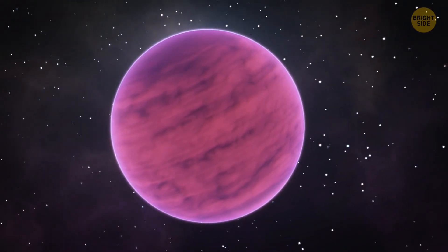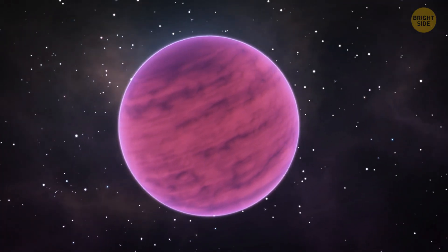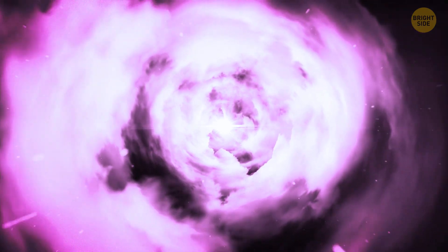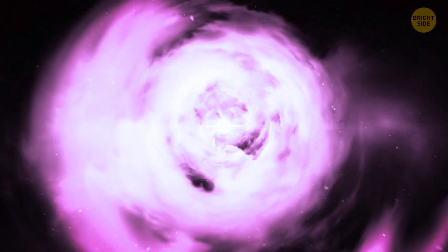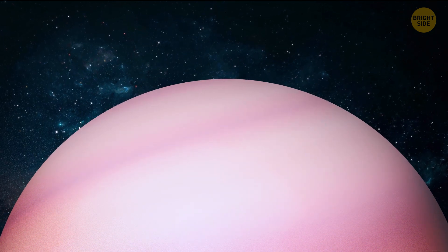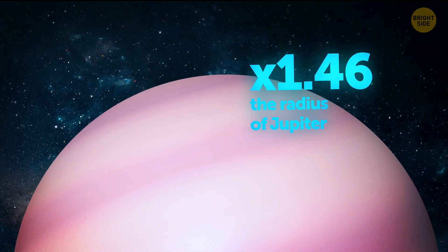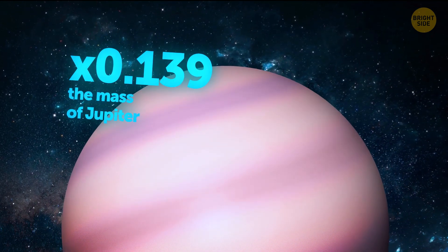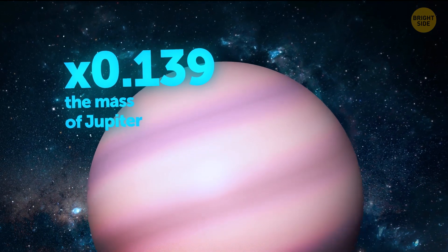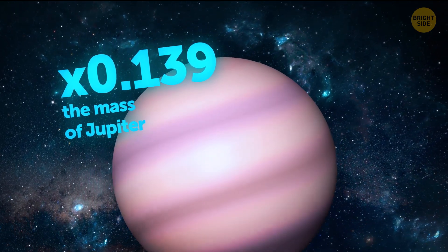It has an extremely low density. Combined with other factors, like its high temperature and the infrared brightness of its host star, it makes it special. Interestingly, the planet's radius is just 1.46 times the radius of Jupiter, but its mass is a mere 0.139 times of our gas giant.